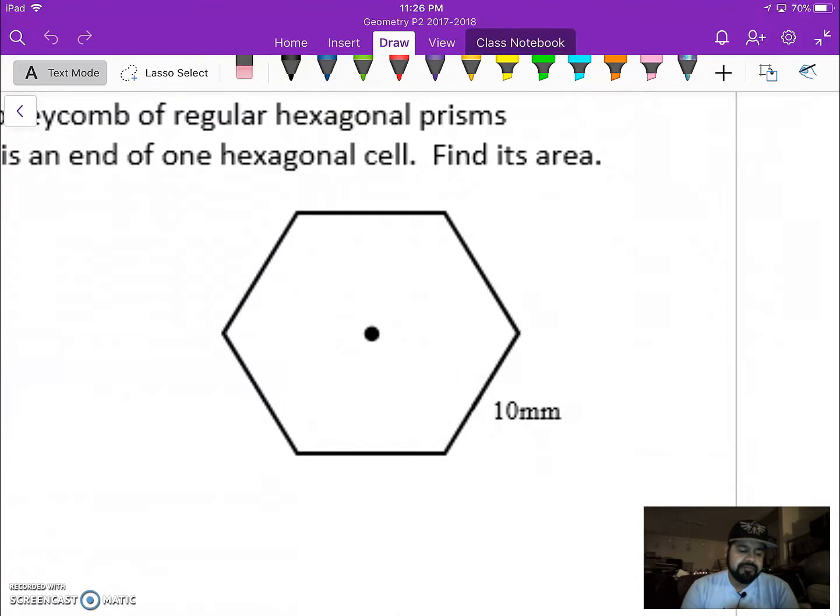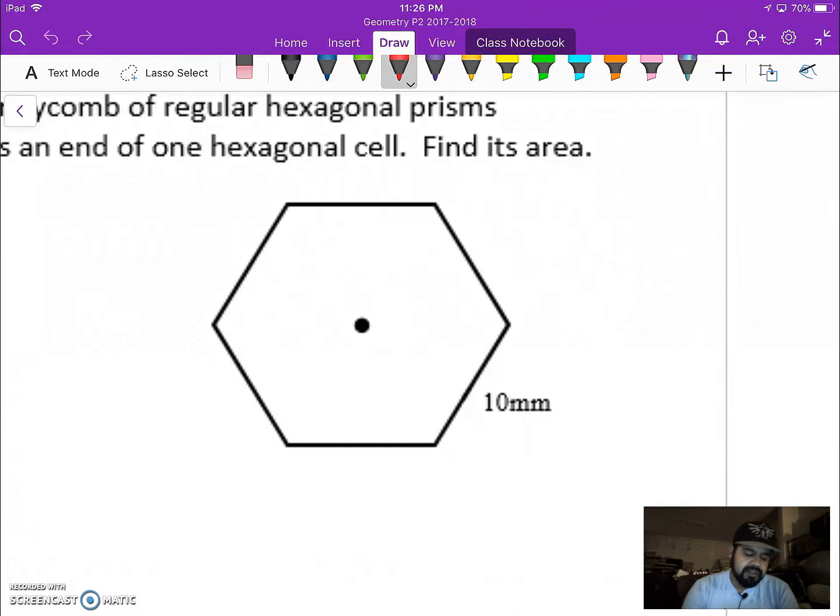We take a look at our hexagonal cell. We notice that we can draw ourselves a triangle right inside. So again, these are the radius and right here is going to be our apothem. My goal is to use the information that I know to try to help me solve this out. Well, I already know that since this is a regular polygon, that means that this entire length is 10. Now the apothem is going to split that into two equal parts here. So we know that those are five and five apiece.